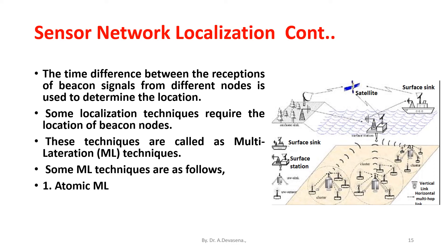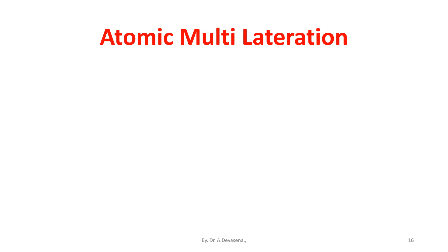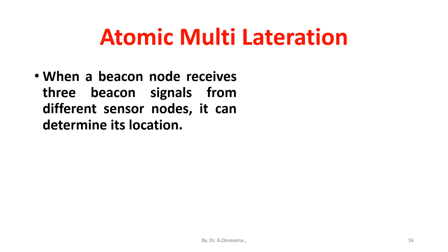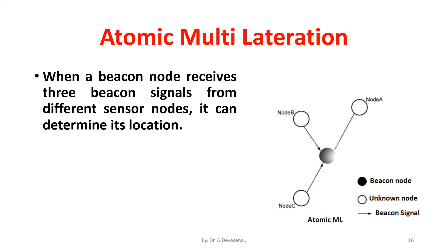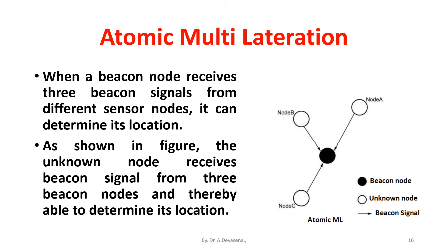In Atomic multilateration, when a beacon node receives three beacon signals from different sensor nodes, it can determine its location. The unknown node receives beacon signals from three beacon nodes and is thereby able to determine its location, as shown in the figure.